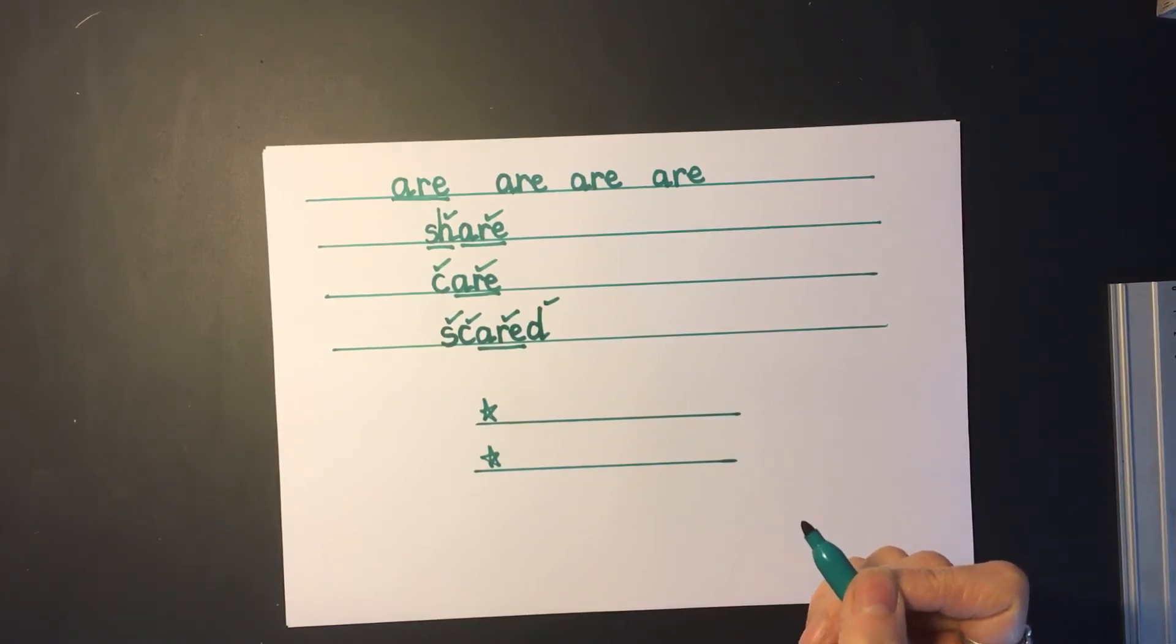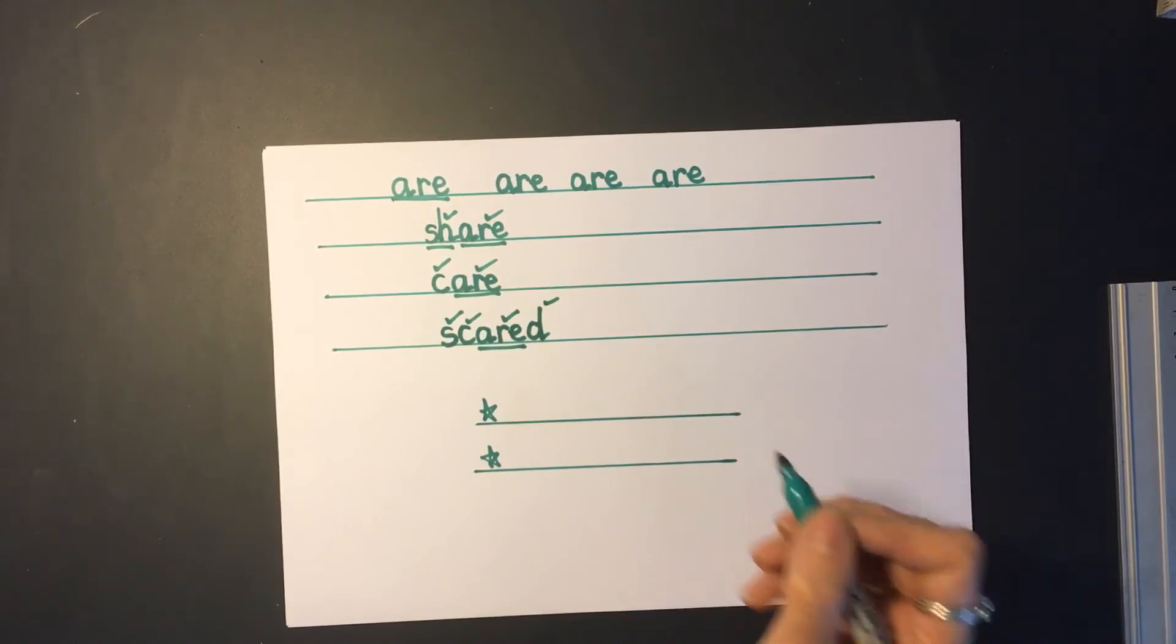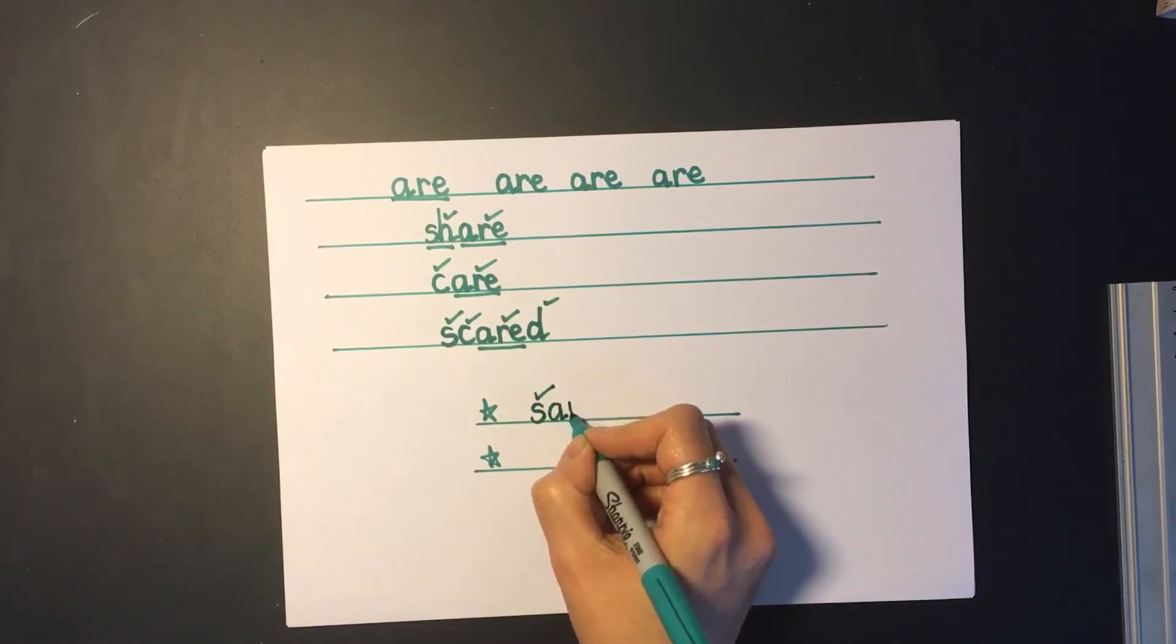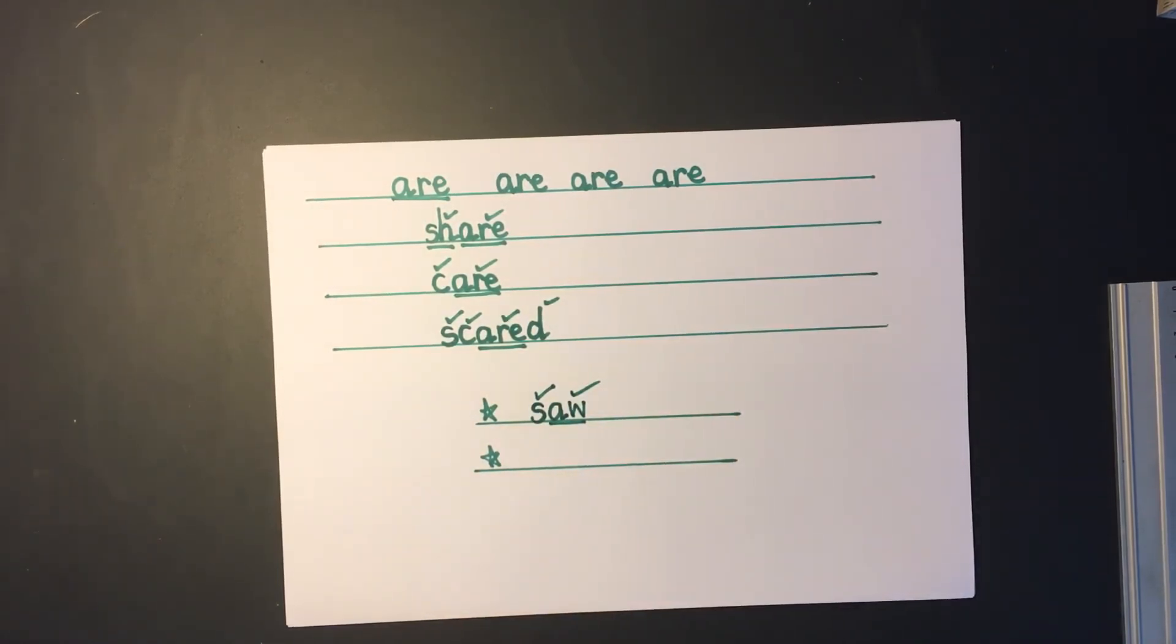Did you remember how to make the or sound? Good. It's A-W, isn't it? So if you got an S, give it a tick. And then A-W for our or sound. Good job.